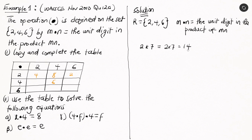So if it is 2 ⊙ 10, that gives us 2 × 10 = 20, and zero becomes the unit digit — that's the answer. That is what the operation means. With this explanation, let's copy and complete the table.